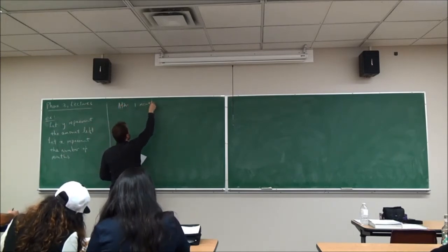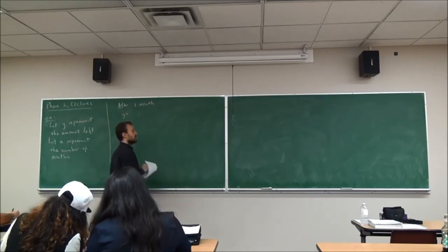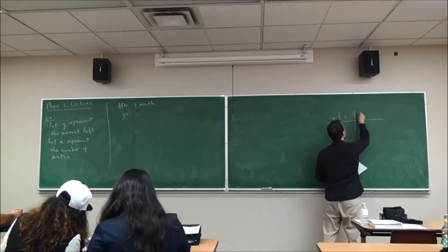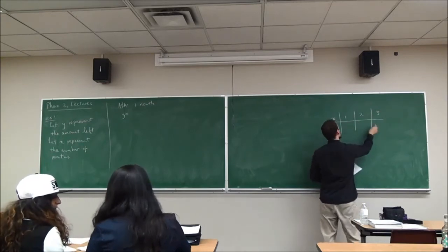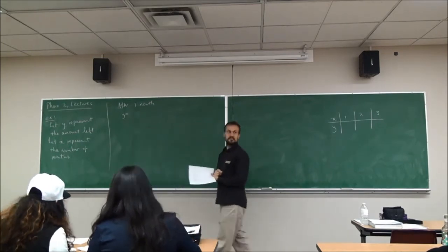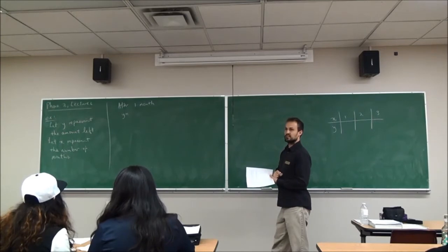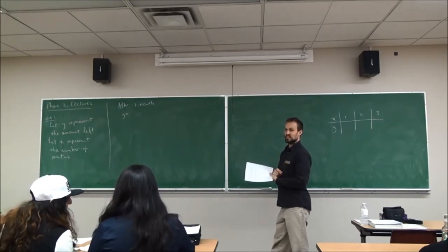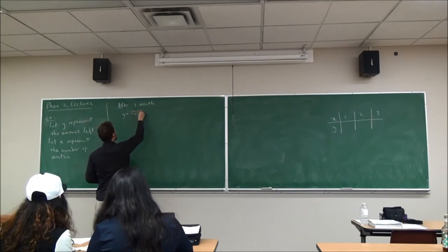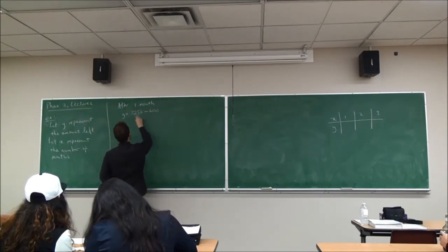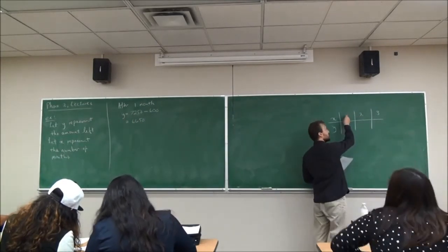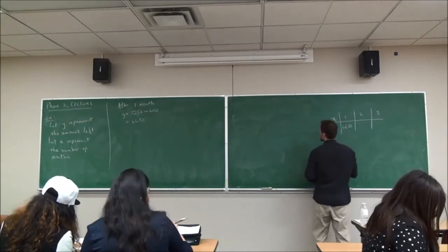After one month, what is the value of Y? Let's make a little table here of X and Y values. As the number of months changes from one to two to three, what is the amount she has left in her savings account? After one month, she has 7,250 minus 600, so she has 6,650. When X equals one, Y equals 6,650.